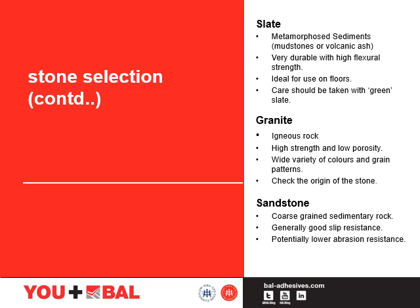Granite has an interlocking crystal structure that imparts a high strength and low porosity. Granite can be used as a thinner slab than most other types of stone and comes in a wider variety of colours and grain patterns. One watch point is to check the origin — a wide source of supply and varying quality makes knowledge of the origin very important. Check the CE marking of the stone.